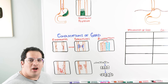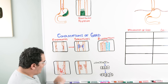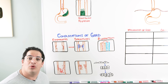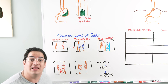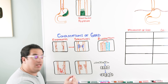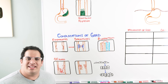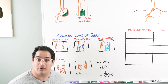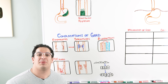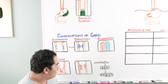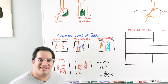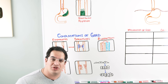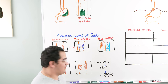If you erode and ulcerate the esophagus, you can erode into blood vessels lining it, leading to GI bleeding. This can present as anemia or fatigue. The last and scariest complication of chronic gastroesophageal reflux disease is that you increase the risk of esophageal cancer.